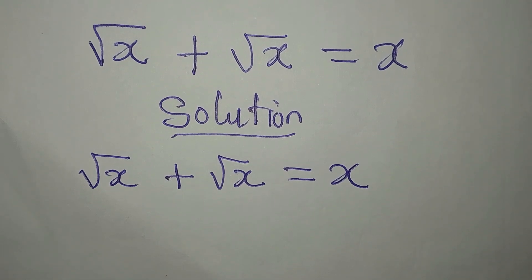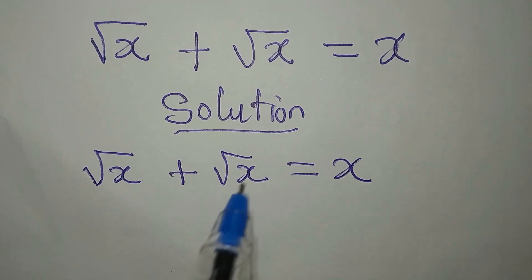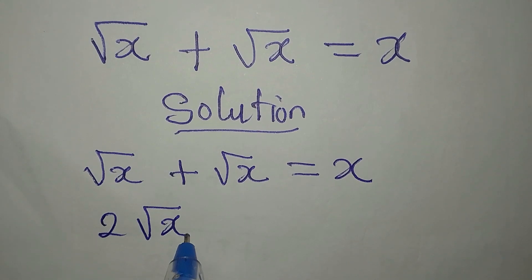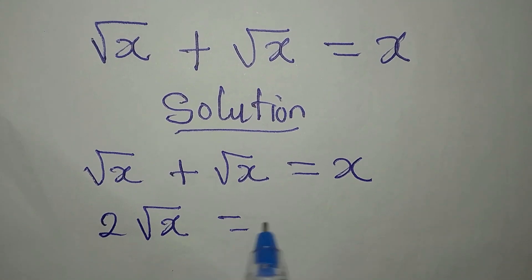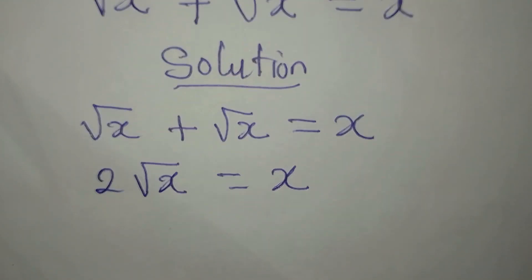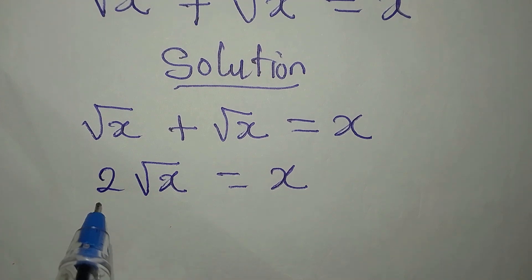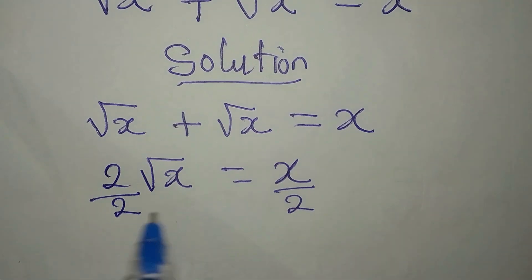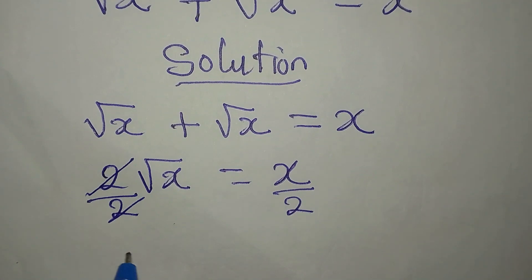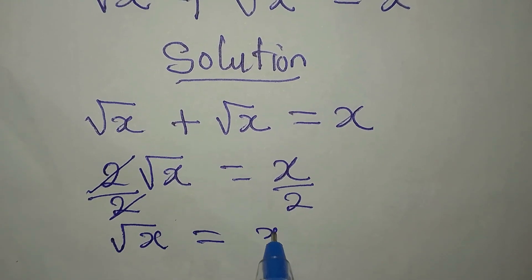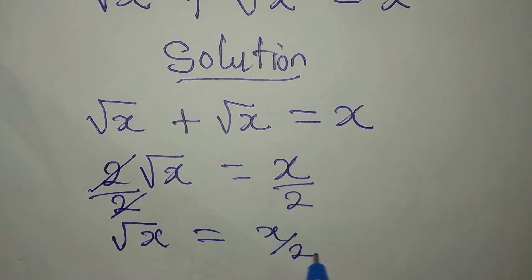The answer is yes. We can add these together to get 2 square root of x, and that is equal to x. Then we divide both sides by 2, so that square root of x is equal to x over 2.